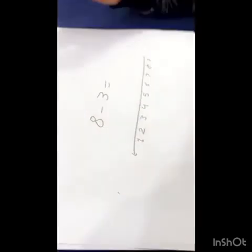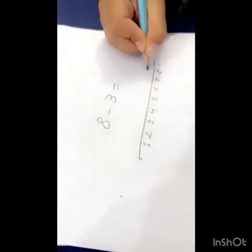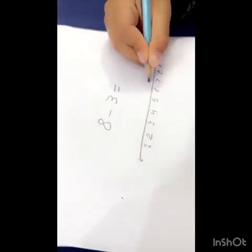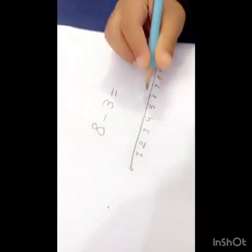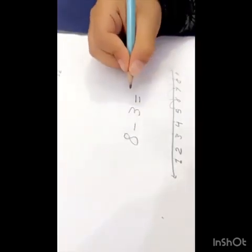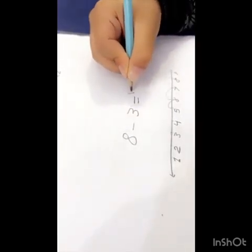How teacher, 8 minus 3 equals? 1, 2, 3 — equals 5. Let's go! Let's go! Let's go!